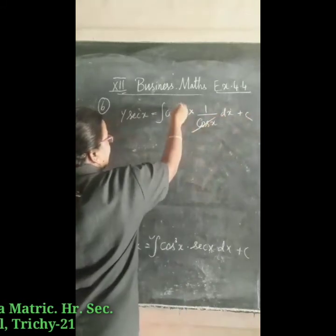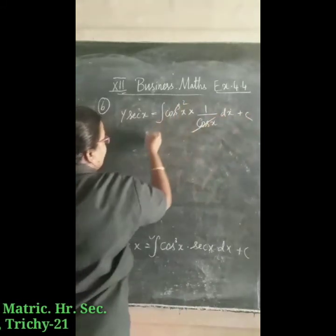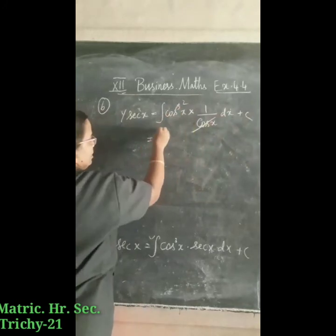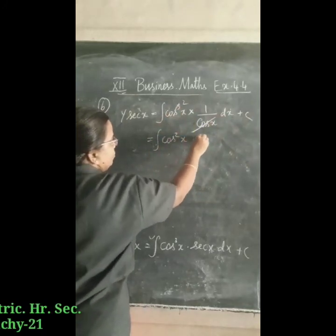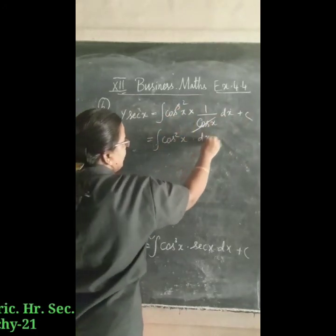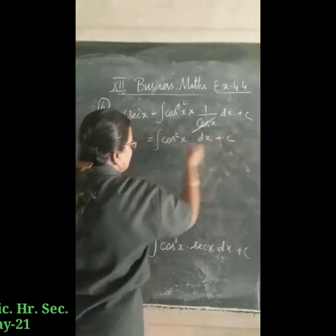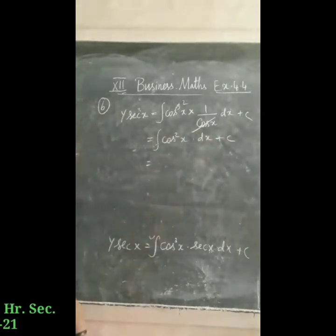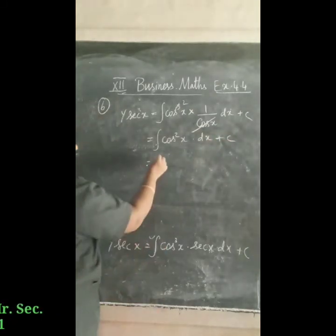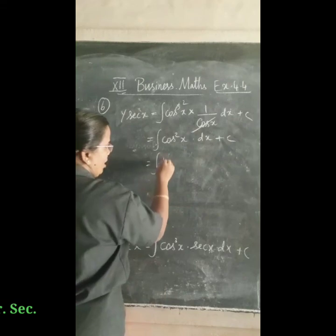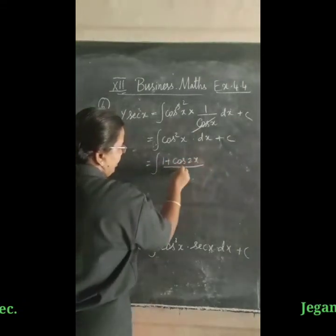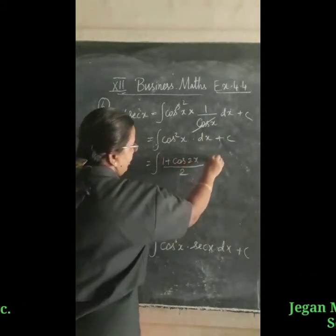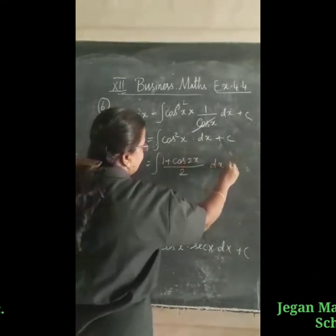The cos x terms partially cancel, leaving the integral of cos²x dx plus c. Using the formula cos²x = (1 + cos 2x)/2, we get the integral of (1 + cos 2x)/2 dx plus c.